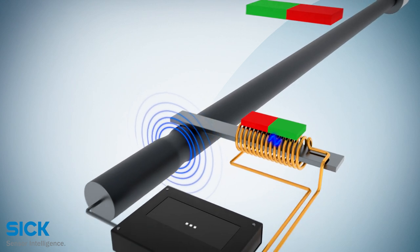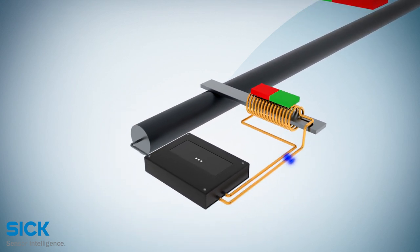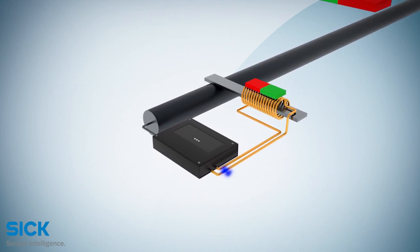The returning strain pulse in the direction of the measurement electronics is converted into an electrical signal by the pickup coil in the strain pulse converter.